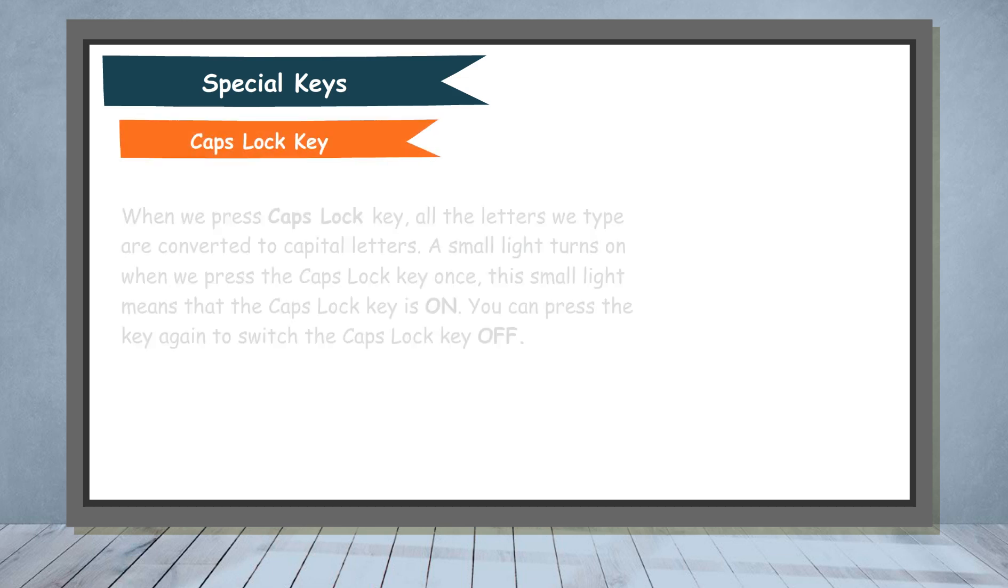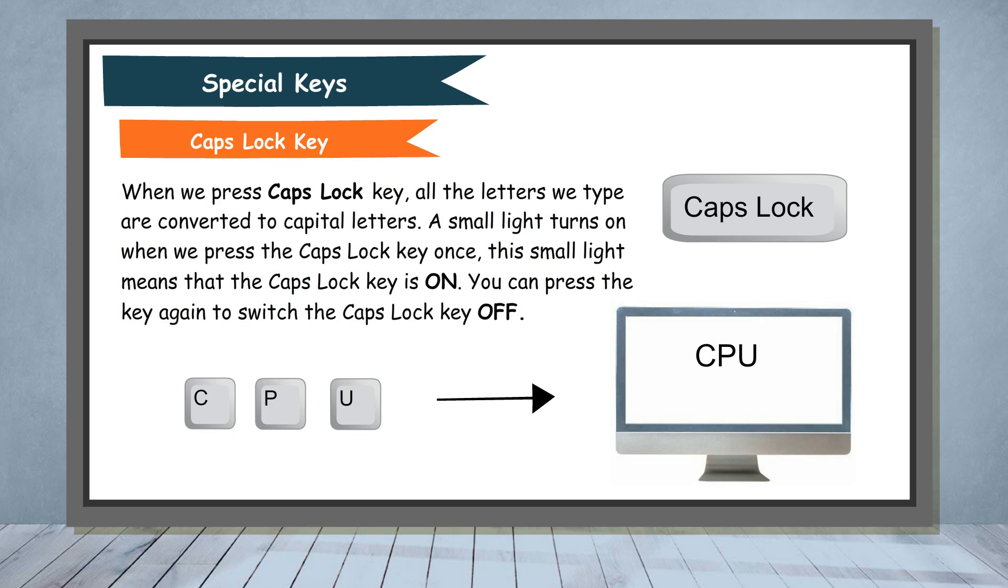Caps Lock key. When we press caps lock key, all the letters we type are converted to capital letters. A small light turns on when we press the caps lock key once. This small light means that the caps lock key is on. You can press the key again to switch the caps lock key off.